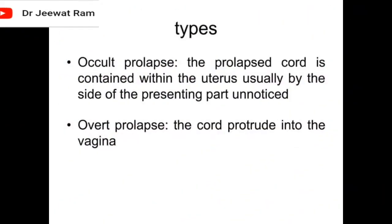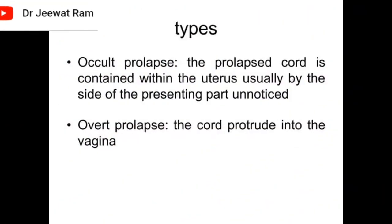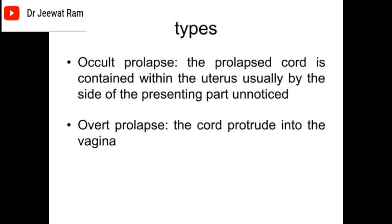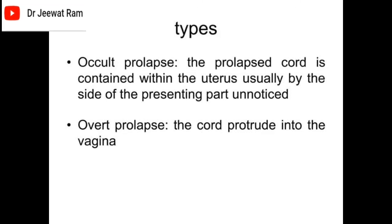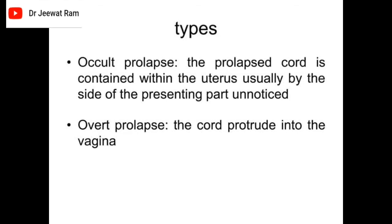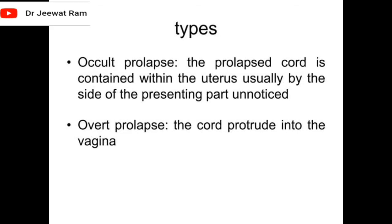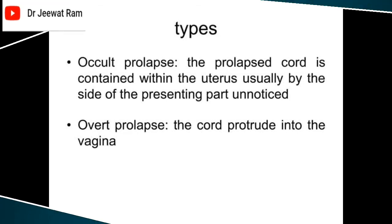Types of Cord Prolapse: Occult prolapse — the prolapsed cord is contained within the uterus, usually by the side of the presenting part, and goes unnoticed. Overt prolapse — the cord protrudes into the vagina.